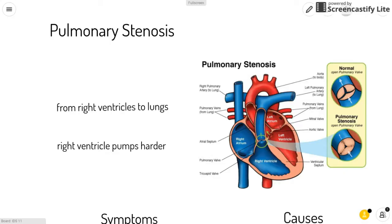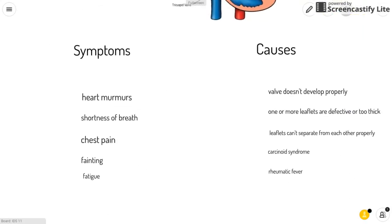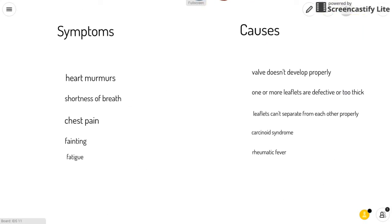This also causes the right ventricle to enlarge because of all the stress on it. Some symptoms of pulmonary stenosis are heart murmurs, which are abnormal whooshing sounds caused by turbulent blood flow, shortness of breath especially during exertion, and chest pain.